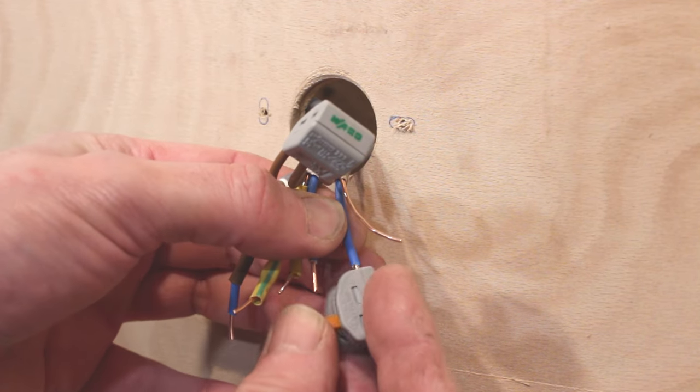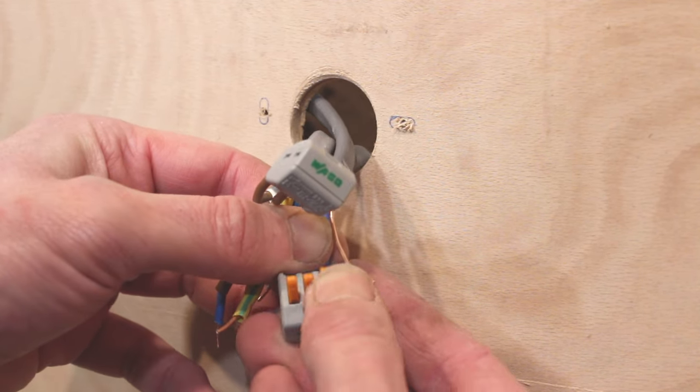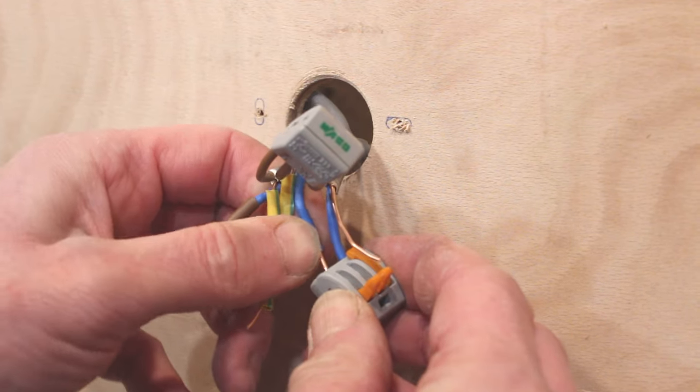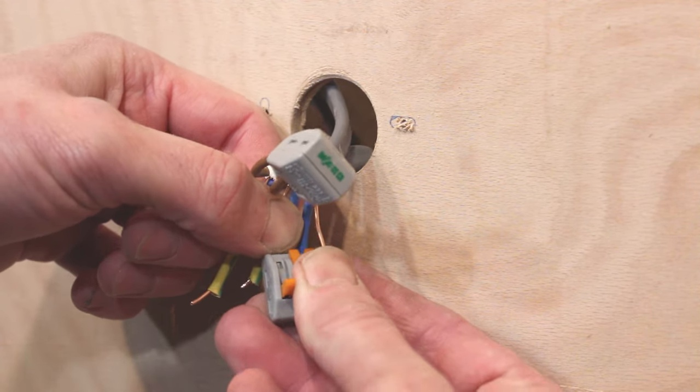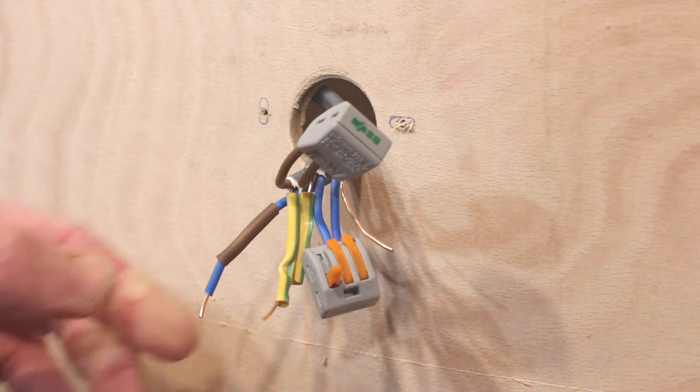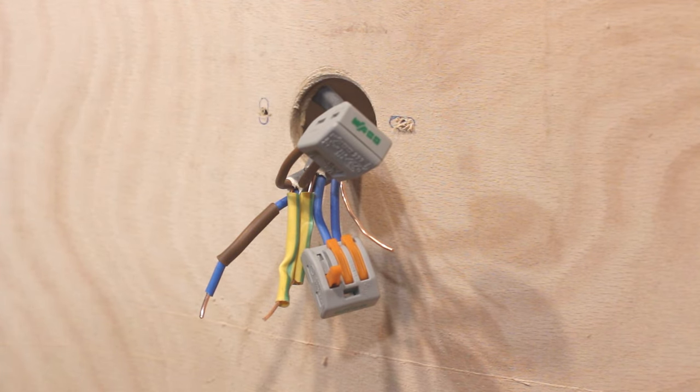So now we want to do the same with the neutrals. Note we're using a three-way connector block here because there's going to be two neutrals from the lighting circuit and when we connect up the light fitting that's where the neutral goes. Like so.